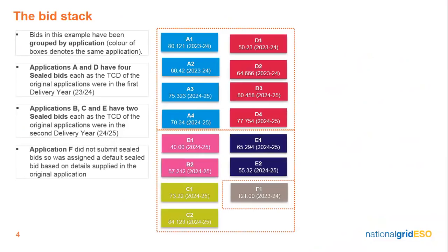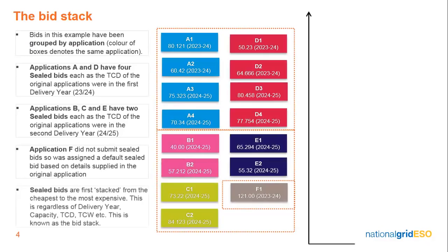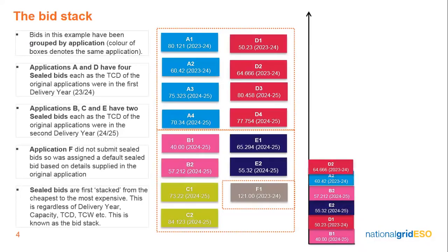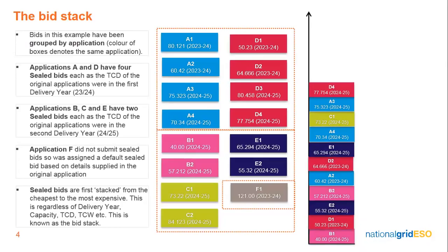If a sealed bid is not submitted by a qualifying applicant, they will be issued a default bid based on the details provided in their original application, as shown in application F here in the centre. Applicants can vary their TCD, TCW start date, capacity, and strike price when submitting sealed bids; further details can be found in our detailed guidance document. Once all bids have been submitted, the system will stack bids from lowest price to highest price regardless of dates, delivery years, capacity or technology. This is known as the Bid Stack and is the starting point for any auction. Bids will be allocated from cheapest to most expensive as the auction proceeds, and all bids compete on a strike price basis.